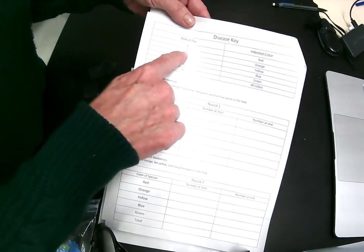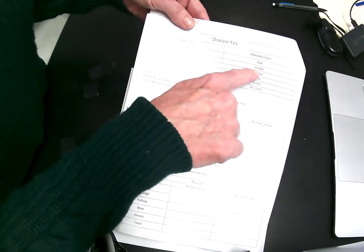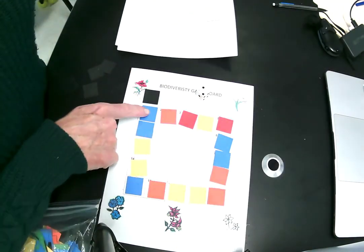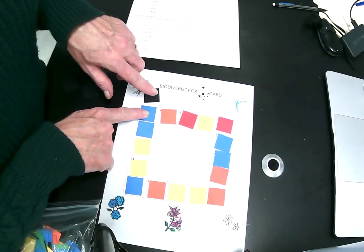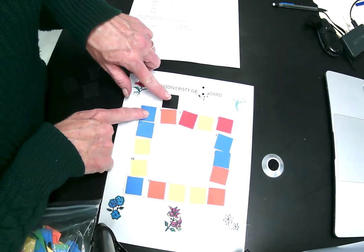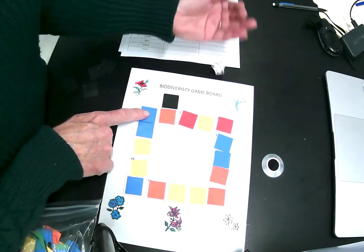And when you look at the disease key, it says that number two kills orange flowers. So the flower in number one is blue, so it's safe. It's fine. So move the square to square number two, roll it again.